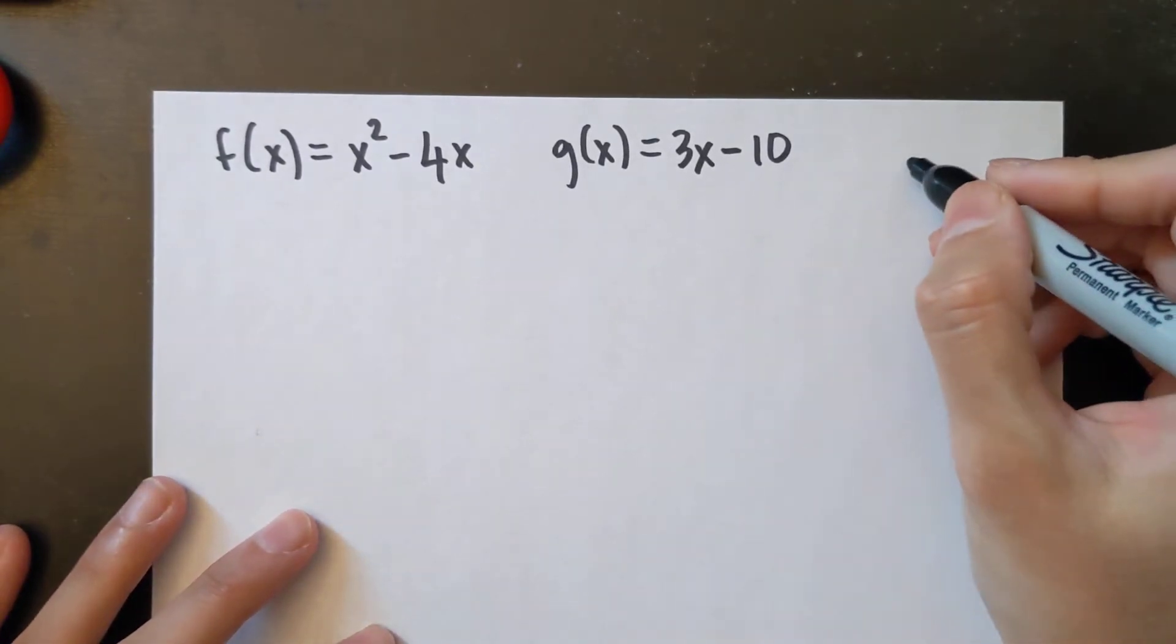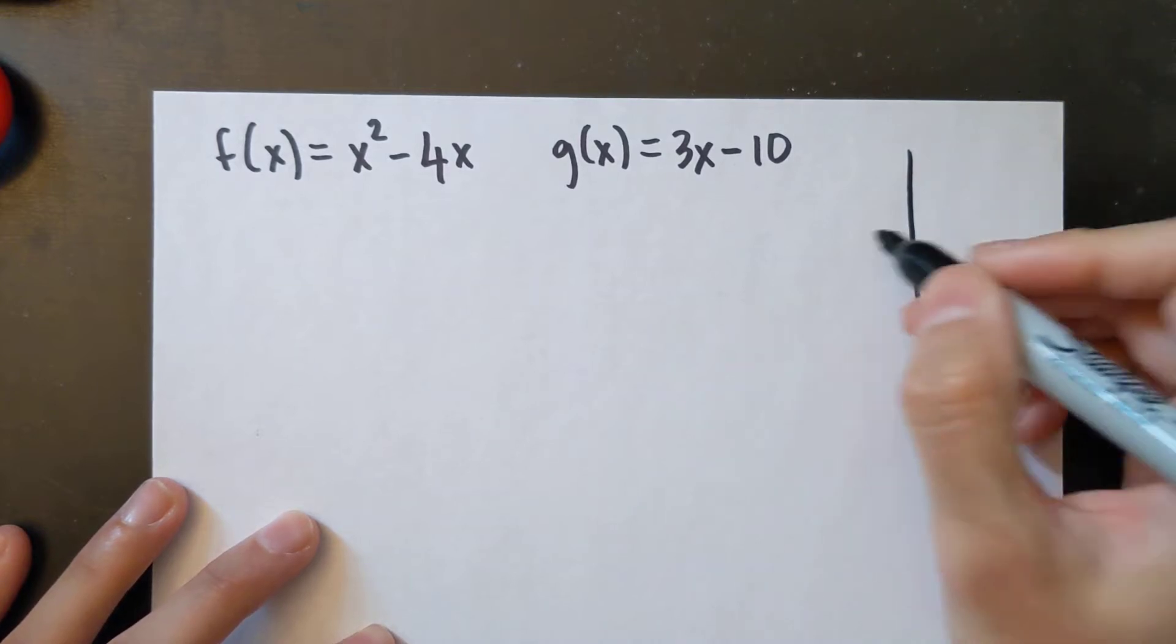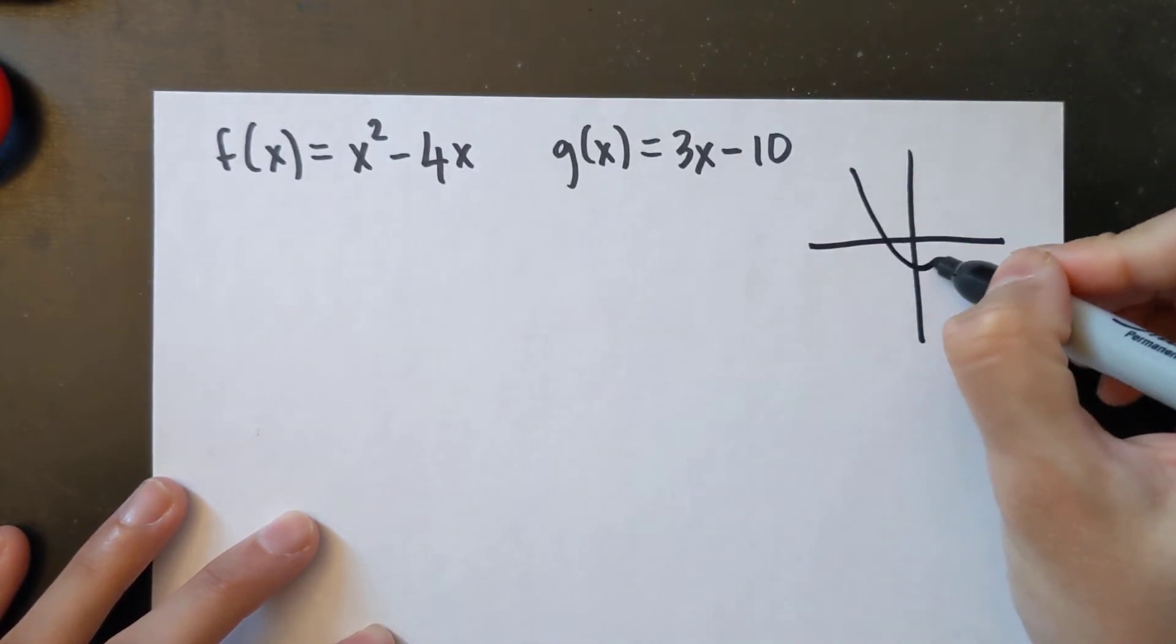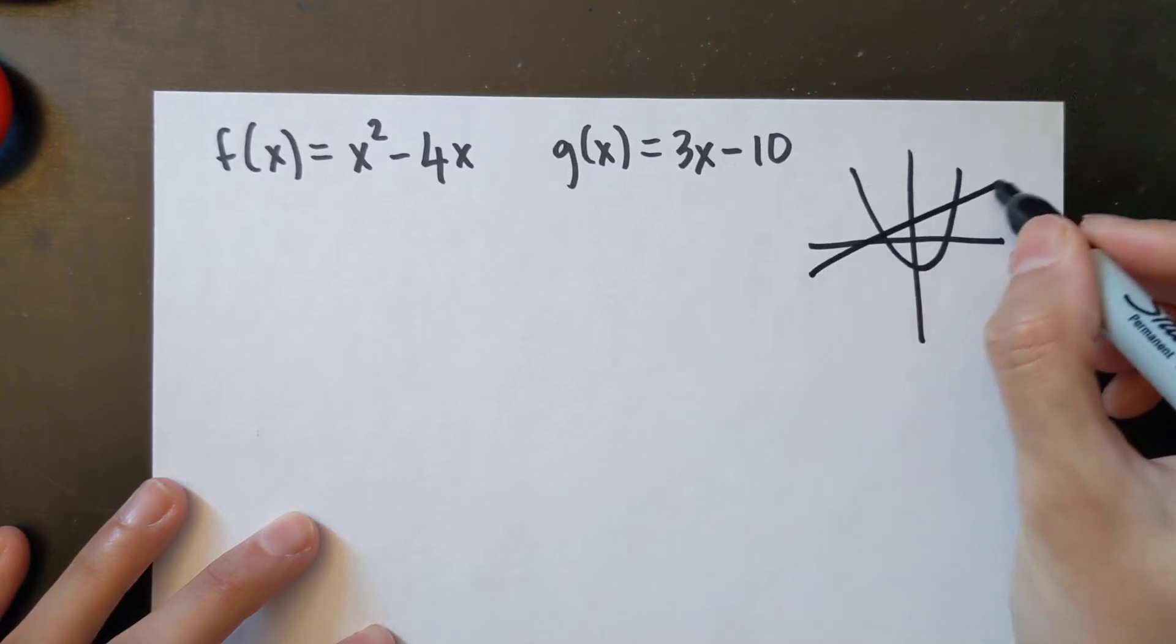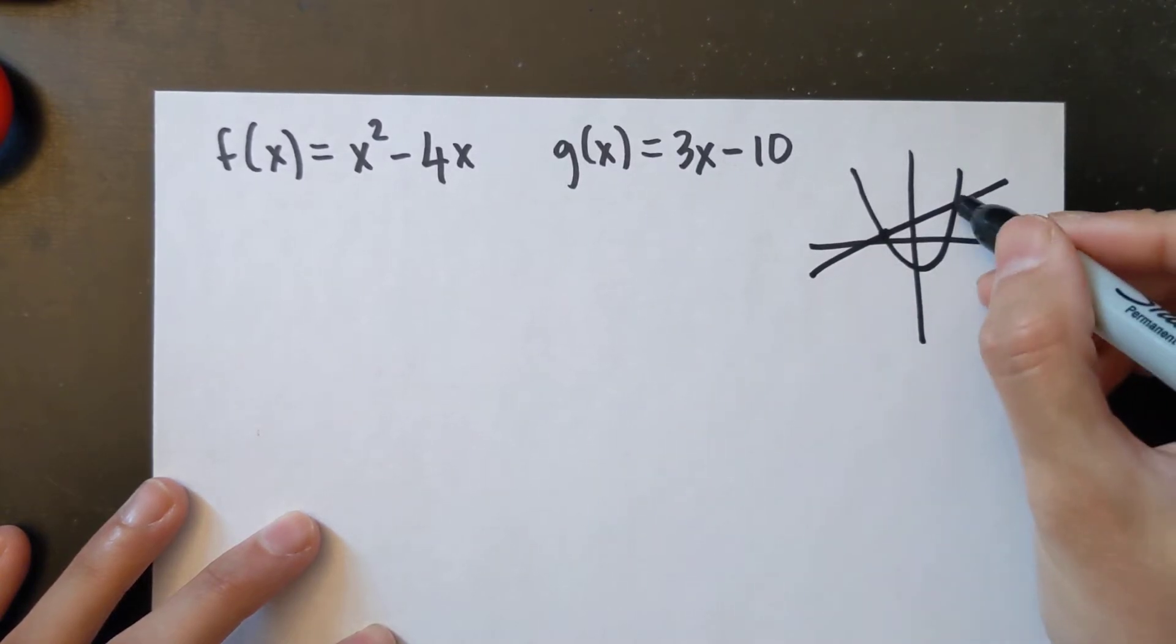Now the important thing to remember is you have three possibilities. Let's say I have a quadratic function like this and a linear function like this. I have two points of intersection.